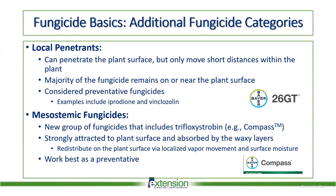There are additional types of fungicides. Local penetrants just penetrate the plant surface a short distance at the leaf tissue, but the majority of the fungicide remains on or near the plant surface. These are best considered preventative fungicides and include hyperbenzimidazoles like 26GT. There's also a new group including trifloxystrobin, which is Compass — a mesosystemic with strong adherence to the plant surface that's absorbed by the waxy layers but is not a true penetrant. It also works best as a preventative.